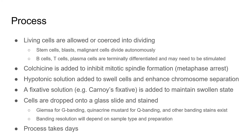The process of preparing the sample for karyotype analysis is pretty straightforward. You grow up the cells of interest in culture. Some cells may need encouragement, such as lymphocytes from a blood sample, and others have no problem taking off, such as malignant cells.